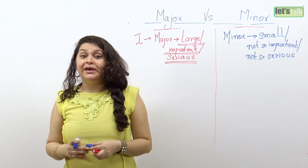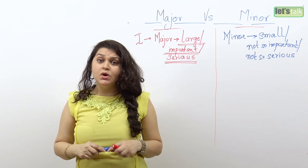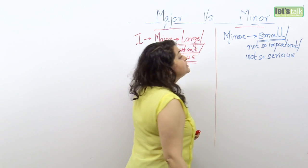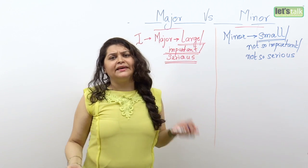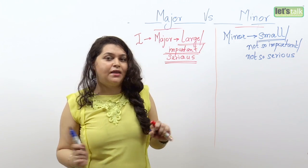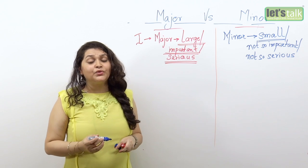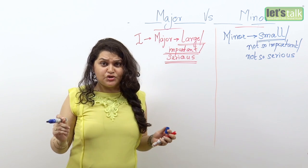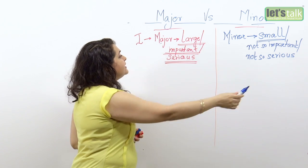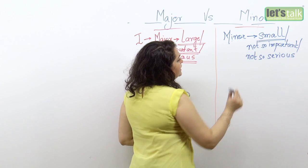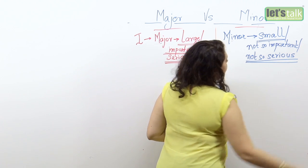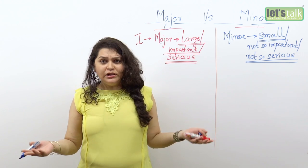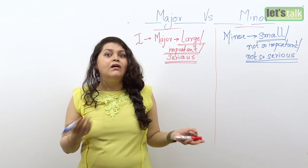So if I come home and I say I faced a minor issue at work, it means I had a small issue or small problem to deal with at work — something that can get taken care of very easily. But if I say I'm going through a minor surgery tomorrow, it means it's not a major surgery; it's not so serious. It could be like a dental extraction, which can be termed as a surgery but is not as serious as a heart surgery.